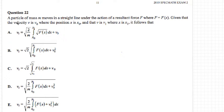So let's read it. A particle of mass m is moving in a straight line under the action of a resultant force F, where F is given by this function of x. Given the velocity is v0 when position is x0, and velocity is v1 when position is x1, it follows that which one of these is the relationship. These look pretty mangled and nasty, so I'm going to try and show where these come from.